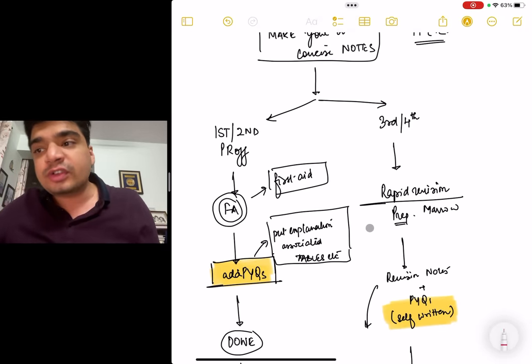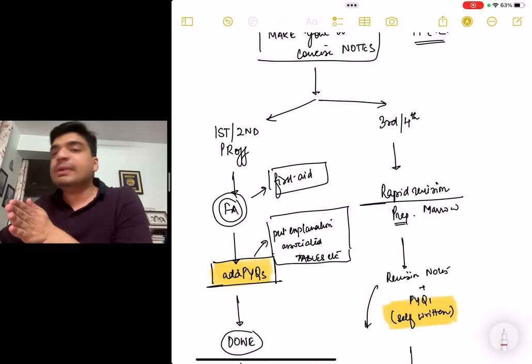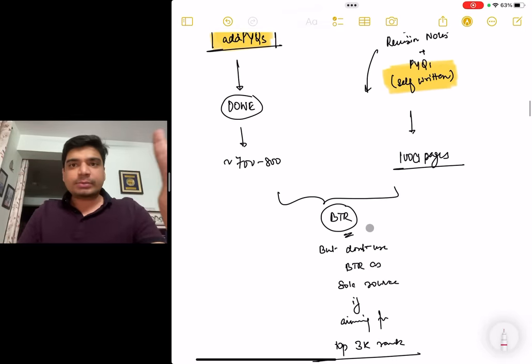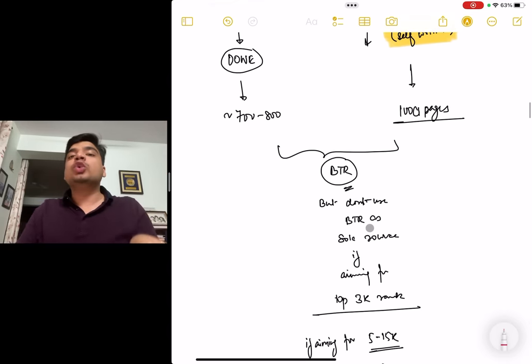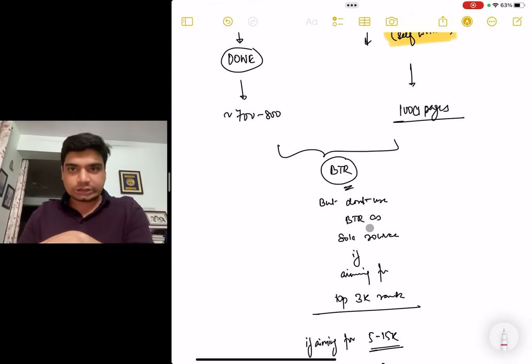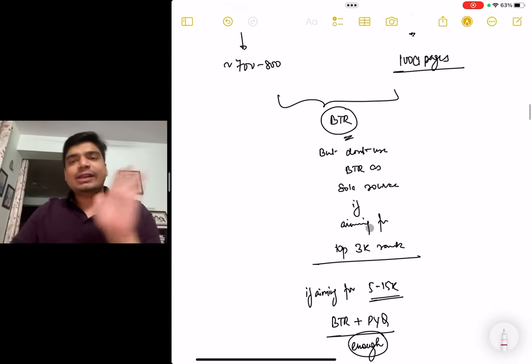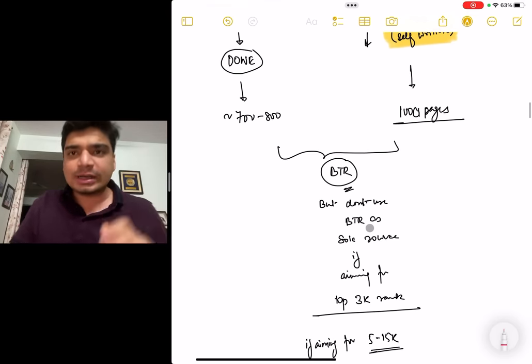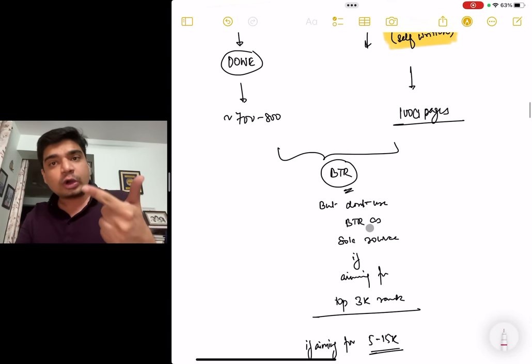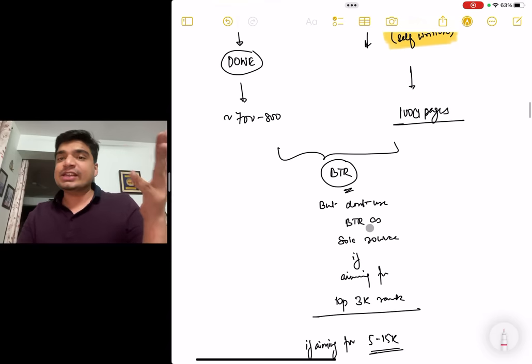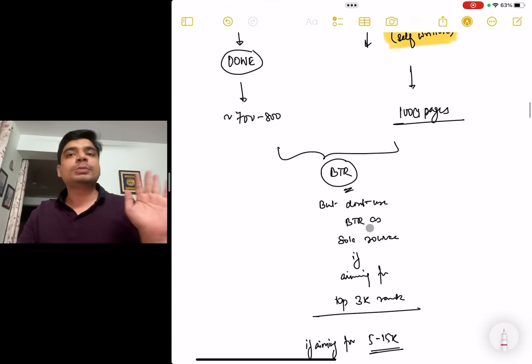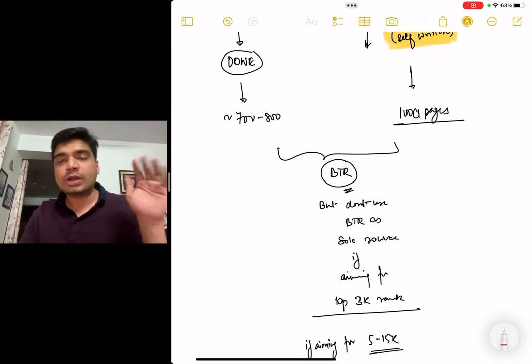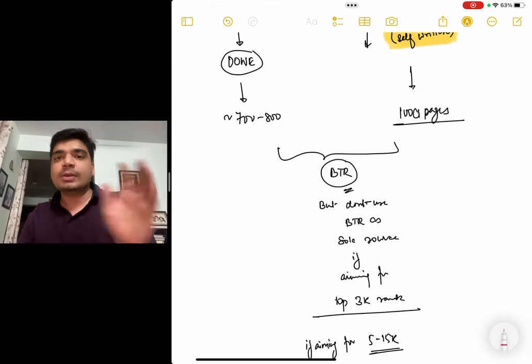For the third and fourth prof, you can use revision notes. You can use BTR as well. Do the previous year question, add those previous year question and the related explanation and you have your revisable material. For those people who are using BTR, just a word of advice, don't solely rely on BTR plus previous year question if your goal is a top 2 to 3,000 rank. If your goal is 5 to 10,000 rank, yes, definitely you can get it with just BTR and previous year question. But if your goal is a top 3,000 or 1,000 rank, maybe a slightly more extensive material, especially for pathology, pharmacology, microbiology, OBS-GYN and surgery. For these five subjects, you need to go a little more in depth if you want that top 1,000 rank. Just BTR won't suffice.